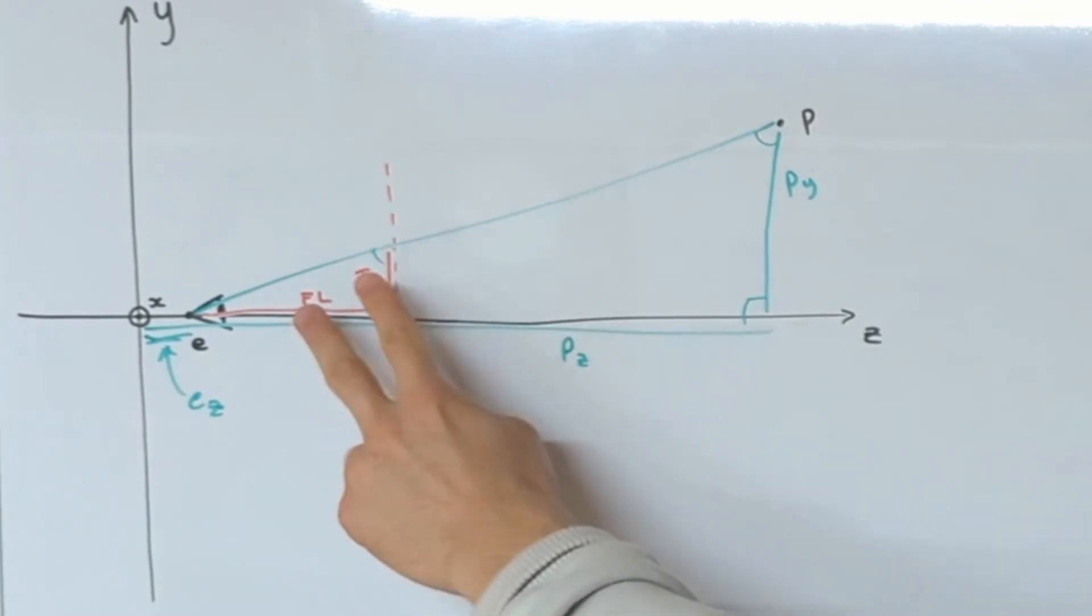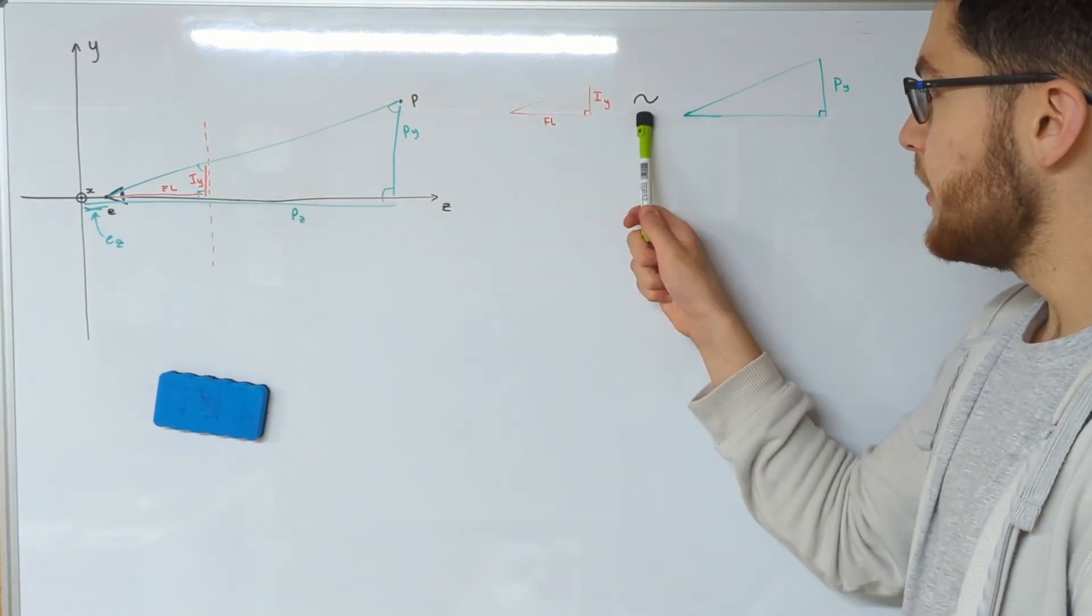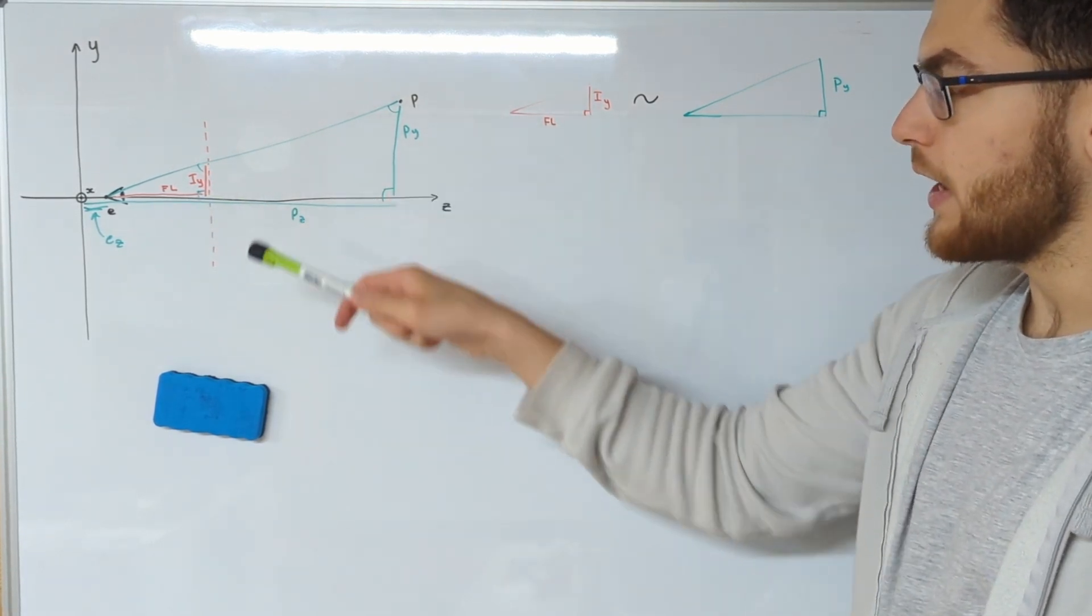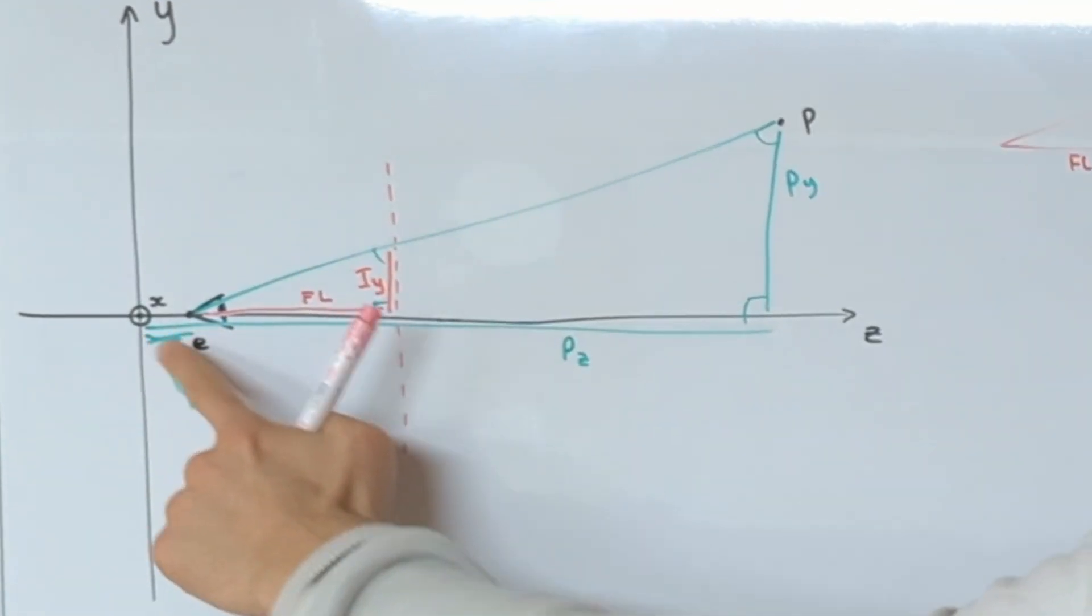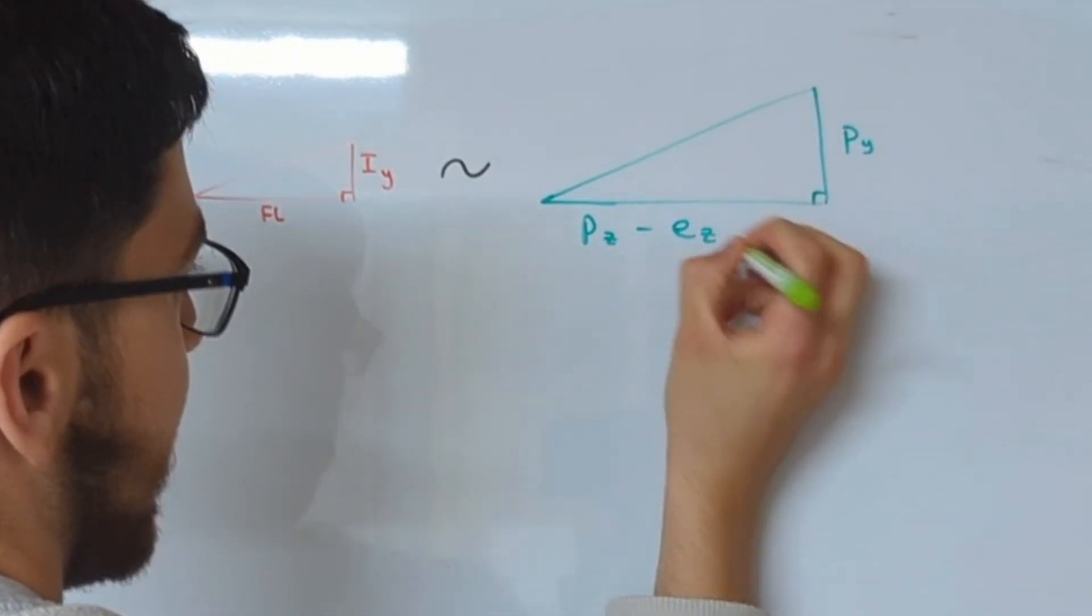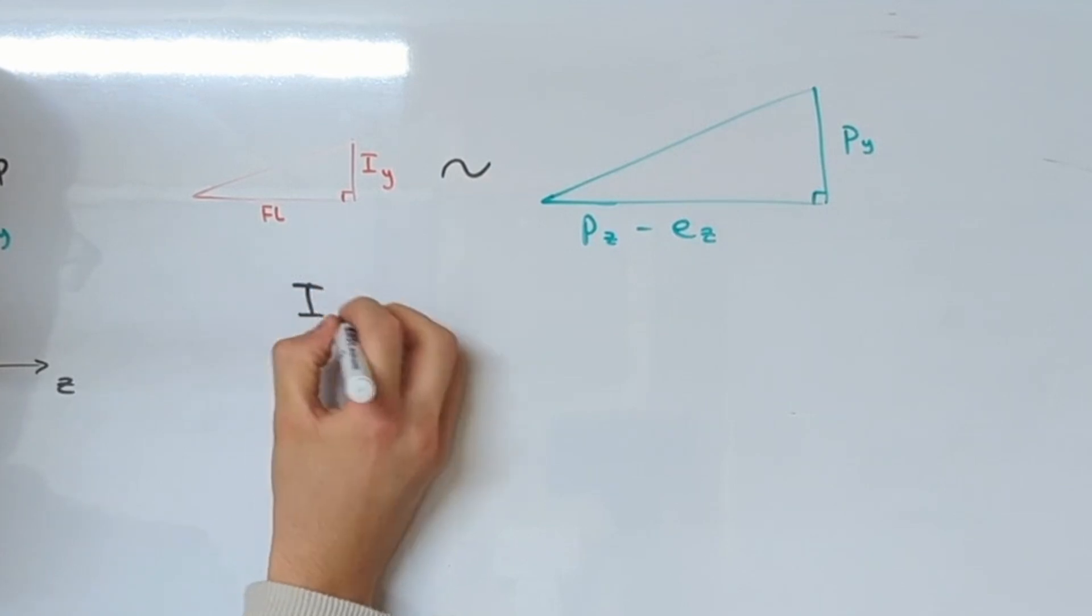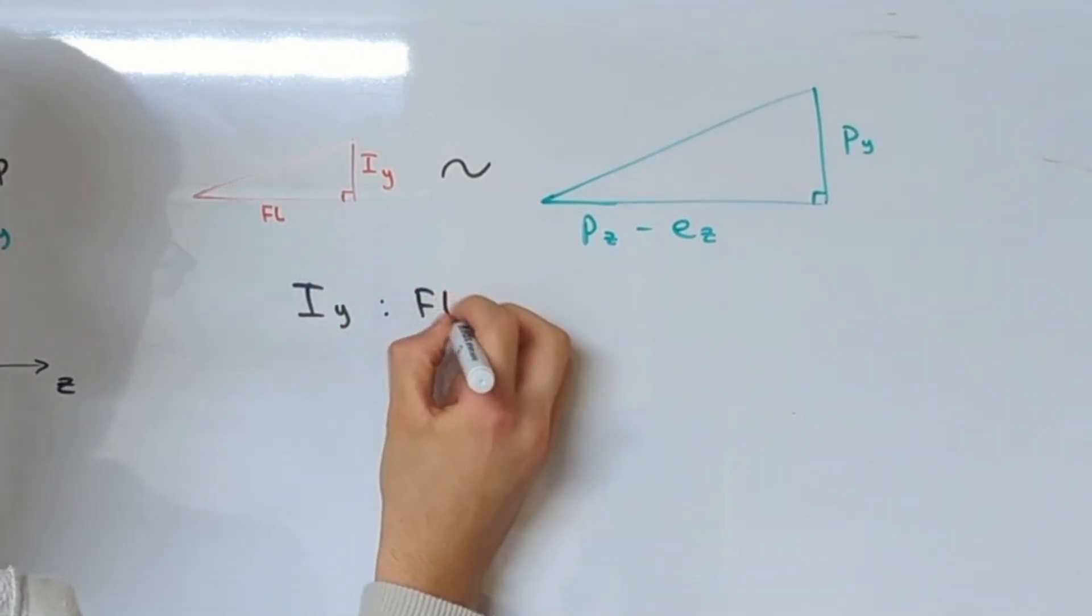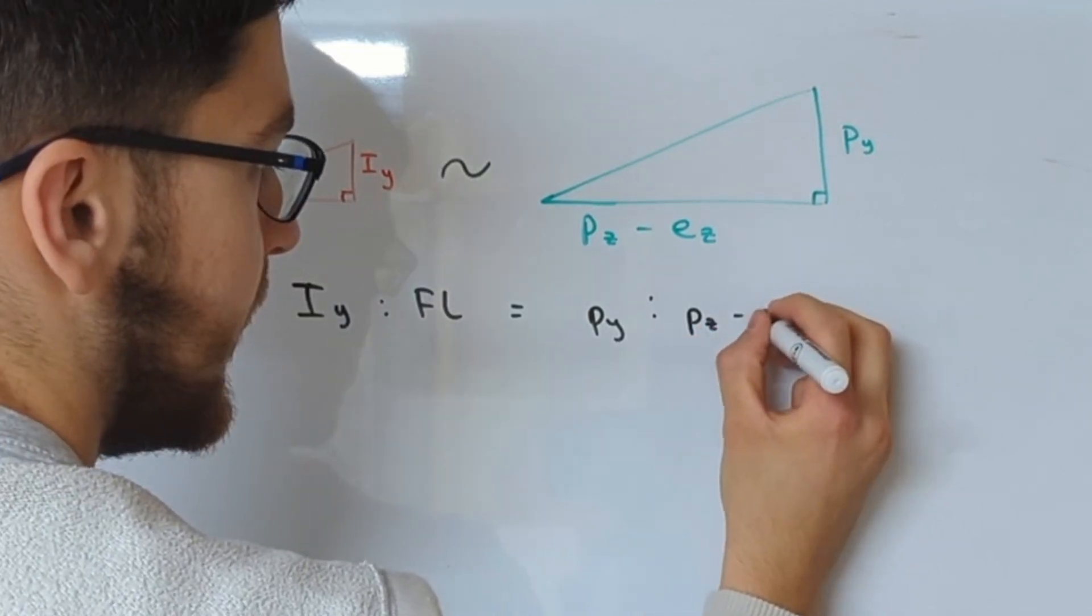So the ratio between that and that is the same as the ratio between that and that. So this little triangle here is similar to this large triangle, and the base of the large triangle is going to be the z-coordinate of P all the way along to subtract this z-coordinate of E. So we've got PZ minus EZ. So because we know that these are similar, that means that the ratio IY to FL is the same as the ratio PY to PZ minus EZ.